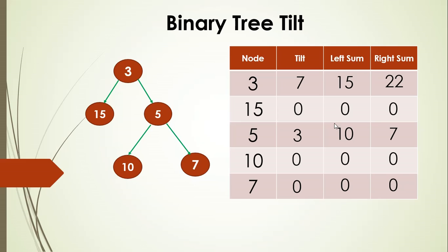To calculate the tilt value for any given node, we must already know the sum of all values in its left subtree and right subtree. That means for any node, we need to have already processed its left and right subtrees before processing the node itself. This pattern should sound familiar — it looks like post-order traversal.